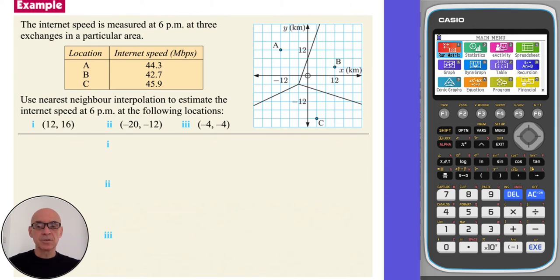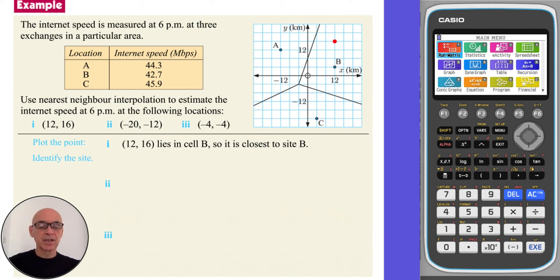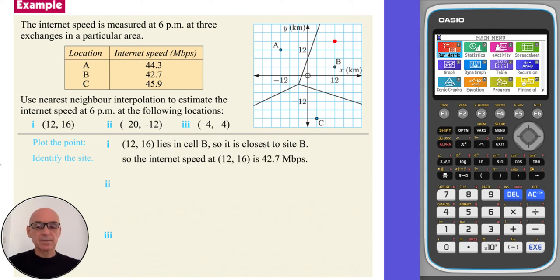In this question, we're asked to use nearest neighbour interpolation to estimate the internet speed at the following locations. In part 1, plotting the location (12, 16), we see that the point lies in cell B, so it is closest to site B. So we estimate the internet speed at this location to be equal to 42.7 megabytes per second.